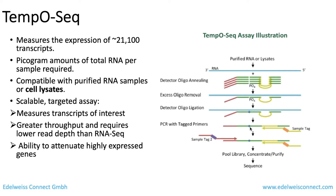TempO-Seq is a next-generation sequencing technology, like RNA-Seq, which is more widely used. It measures expression of around 21,100 transcripts — much fewer than RNA-Seq — and only requires picograms of total RNA per sample. It's compatible with cell lysates or purified RNA samples and is a very scalable, targeted assay. It measures transcripts of interest rather than the whole genome, has higher throughput, requires lower sequencing depth than RNA-Seq, and also captures highly-expressed genes.